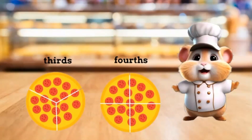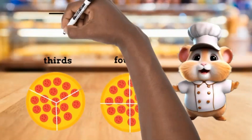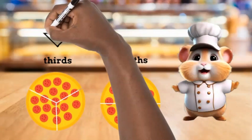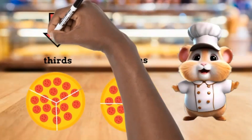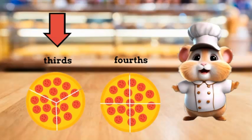If a customer was really hungry, from which pizza should I serve them a slice? The pizza cut into four smaller slices where each slice equals one fourth, or from a pizza cut into thirds where each slice equals one third? That's right — I should give the customer a slice from the pizza cut into thirds, because one third is larger than one fourth.